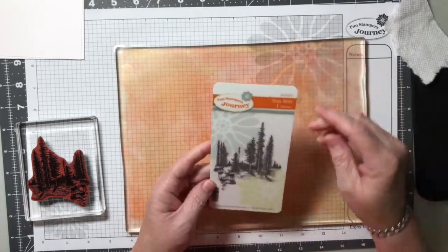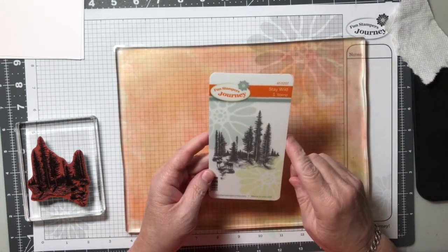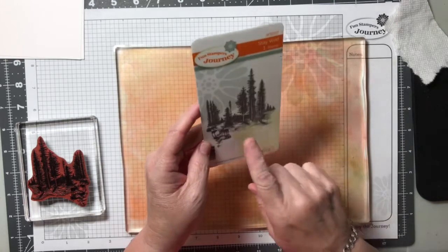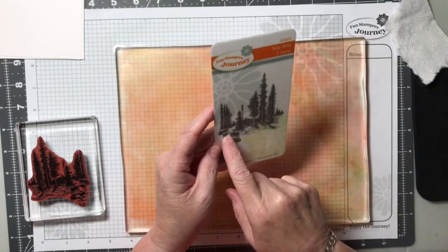I'm going to be using the Stay Wild stamp set. It's AT-0207. And it's one stamp, forest with some elk or moose down here.